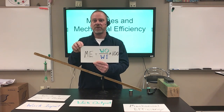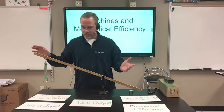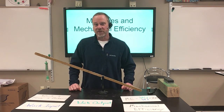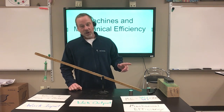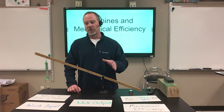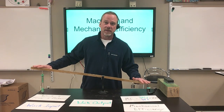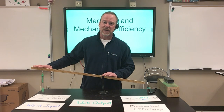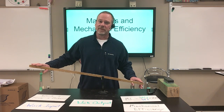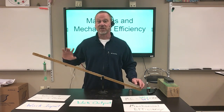Simple machines like the lever, the pulley, and the inclined plane tend to be pretty efficient. There is no machine that is 100 percent efficient — a machine's efficiency always has to be less than 100 percent. One hundred percent efficiency would mean whatever work you put in, you're getting the same amount out. But because there's always a little bit of friction, some of the work input is not going to become work output. It's impossible to have a machine that is 100 percent efficient or greater.